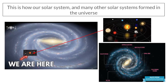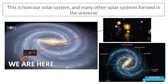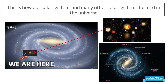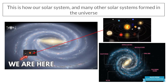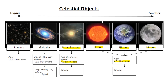This is how our solar system and many other solar systems formed in the universe. Our solar system is a star — in this case our sun — and all the objects revolving around it, which are our planets. Our solar system is in the corner of the Milky Way galaxy, which includes billions of other stars that may also contain their own solar systems. Our solar system, our star the sun, our planets, and our moon started forming around 4.6 billion years ago.